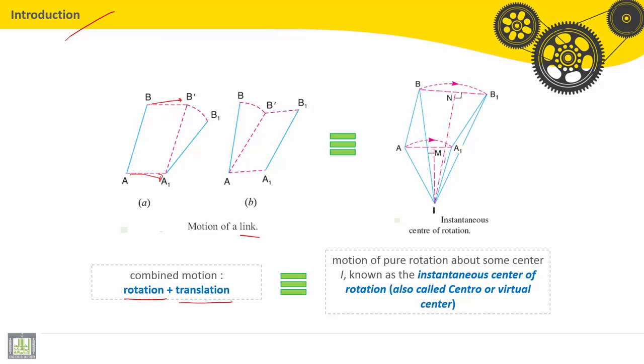After that it makes a rotation around A1, B' moves to B1. Or it can start by rotation around A, B moves to B'. After that it makes a translation, B' moves to B1 and A moves to A1. The final position is A1 B1 for both, even if started by rotation or translation.